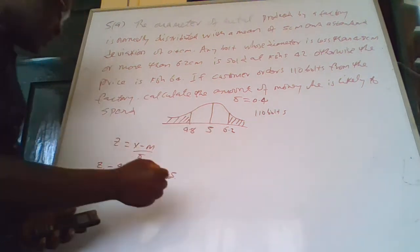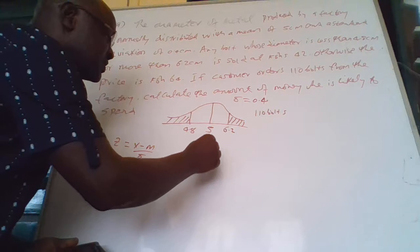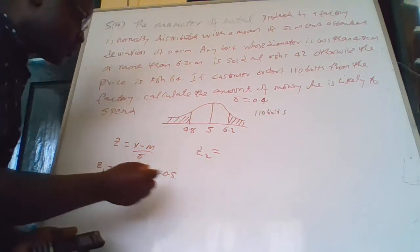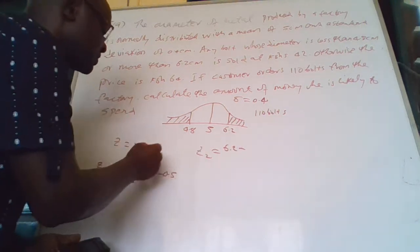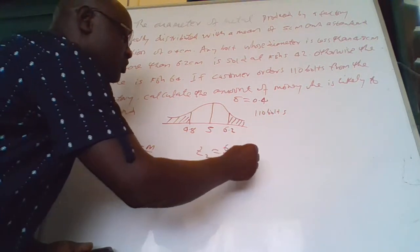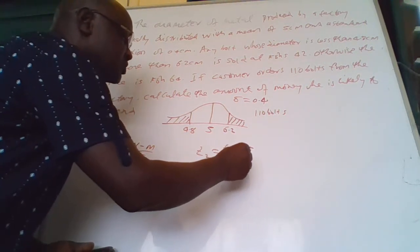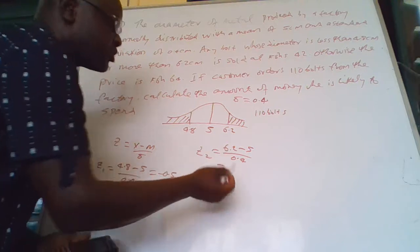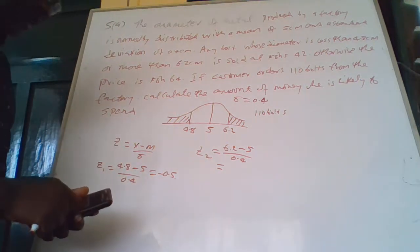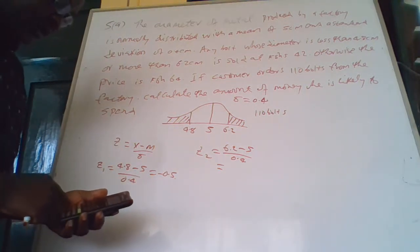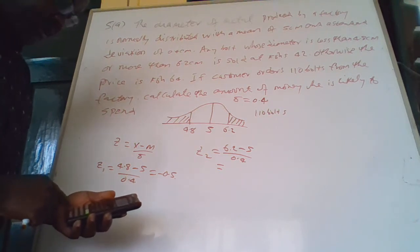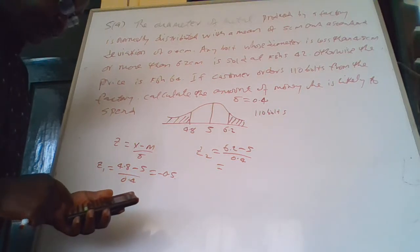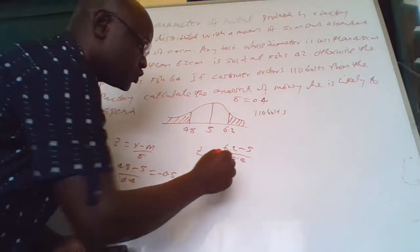We can also calculate Z2, where x is 6.2, minus the mean which is 5, over the standard deviation 0.4. So that is 6.2 minus 5 divided by 0.4, which equals 3.